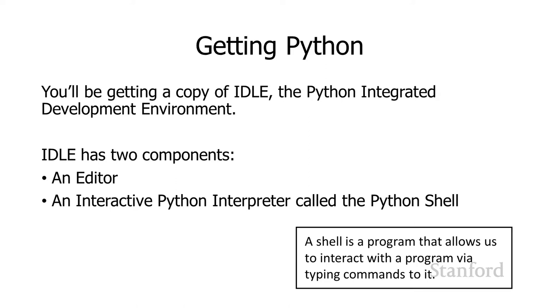A shell is a program that allows us to interact with a program or the operating system by typing commands to it. This mode of interaction by typing is sometimes referred to as a command line interface, as opposed to a graphical user interface, which is the type of interface that you're probably more used to.